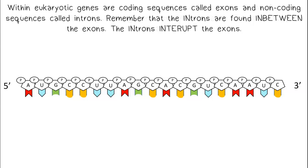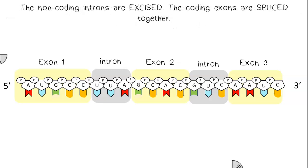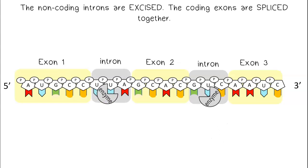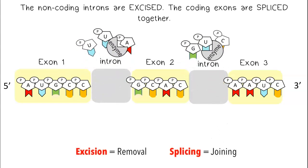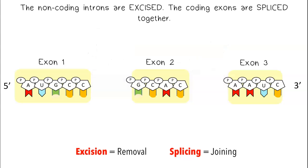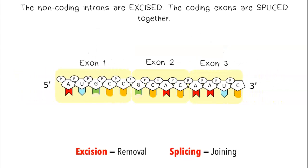Within eukaryotic genes are coding sequences called exons, and non-coding sequences called introns. Remember that the introns are found in between the exons. The introns interrupt the exons. The non-coding introns are excised. Excision means removal. And the coding exons are spliced together. Splicing means to join.